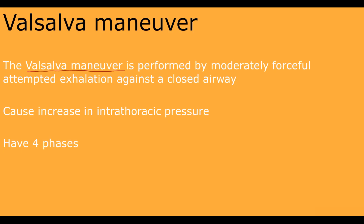To perform the Valsalva maneuver, you simply need to close your nose and mouth and then try to exhale. This forceful exhalation against closed airways is called the Valsalva maneuver, and the central effect of this maneuver is increasing intrathoracic pressure.